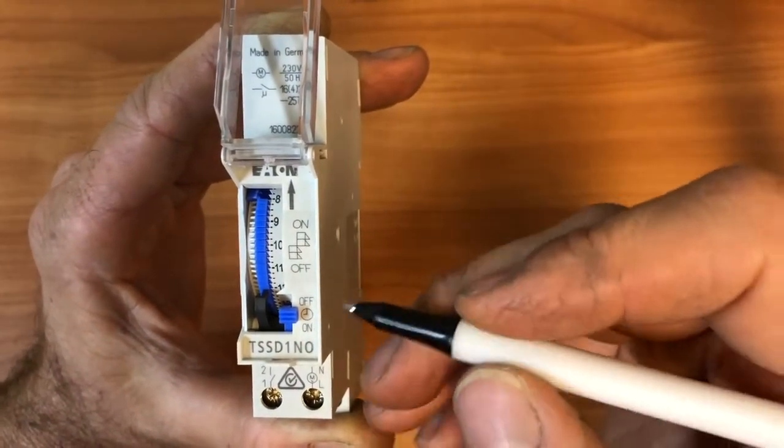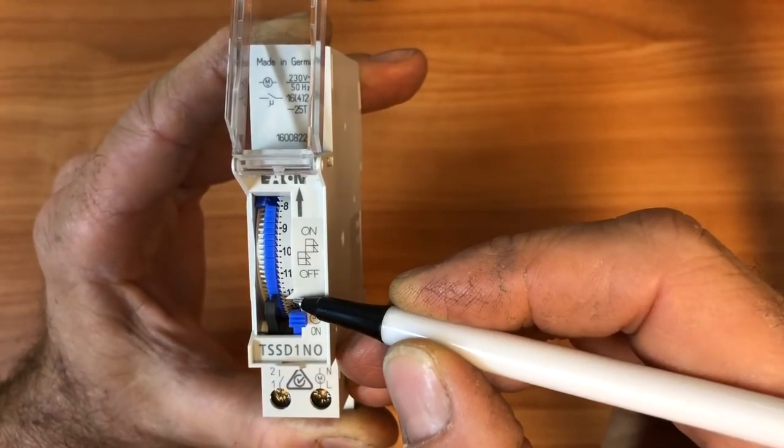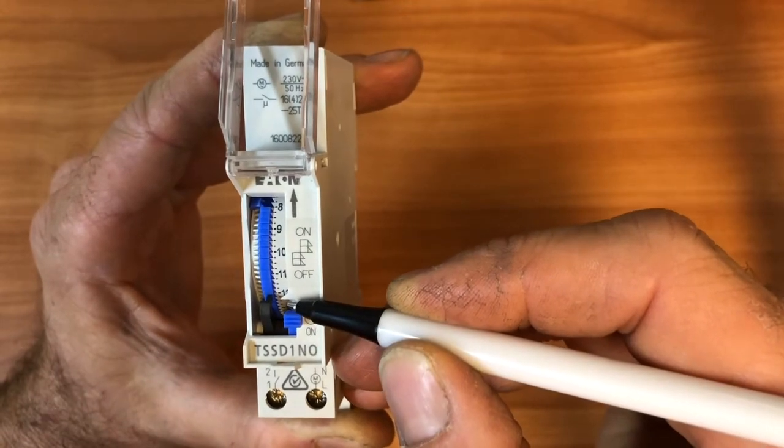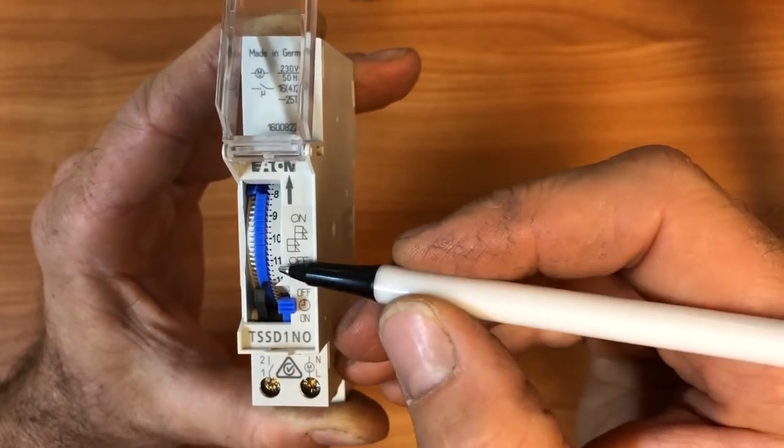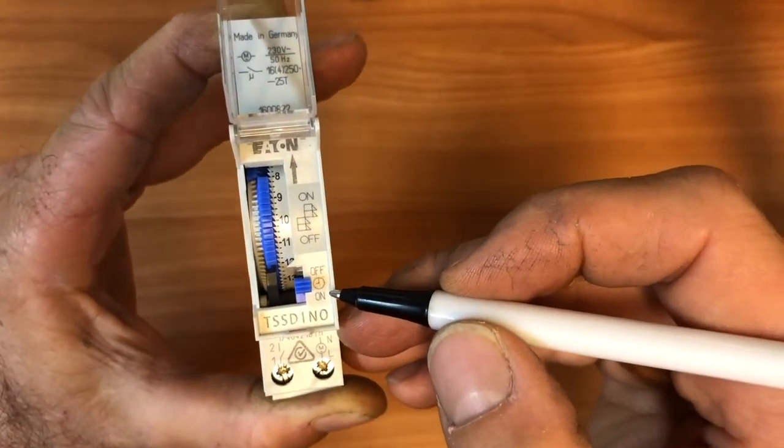Now we've got this little divot which sticks out here. Now that is the current time of the system the timer is actually set to at the moment. So you see 10, 11, 12, so it's on 12 at the moment, so it's actually set on midday at the moment.